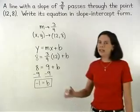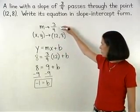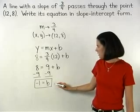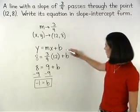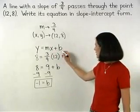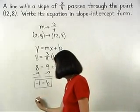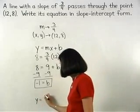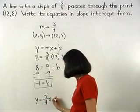So m equals three-fourths and b equals negative one. And we substitute these values into our formula for m and b to get y equals three-fourths x minus one.